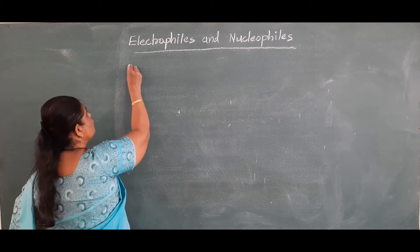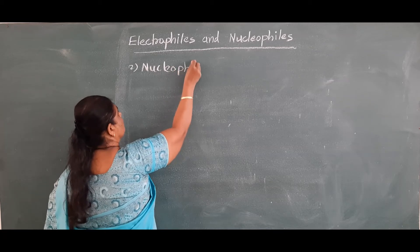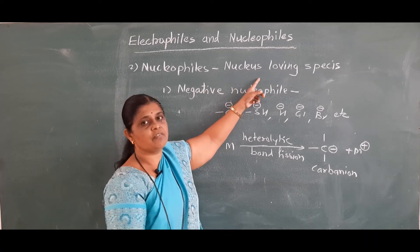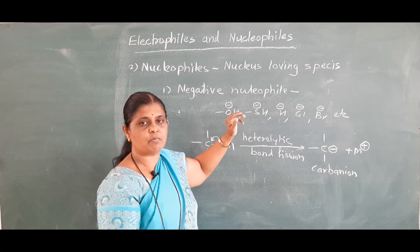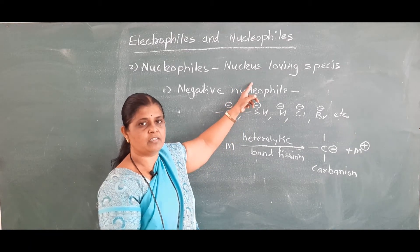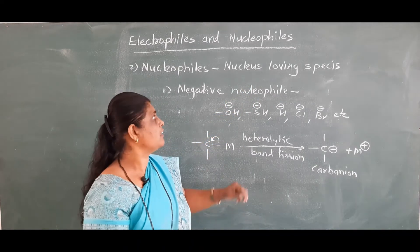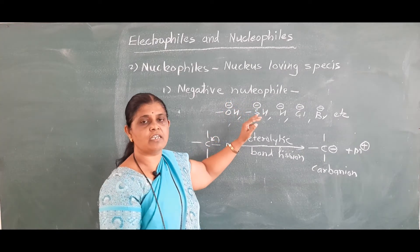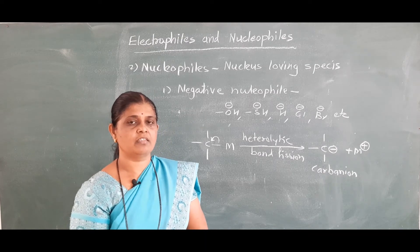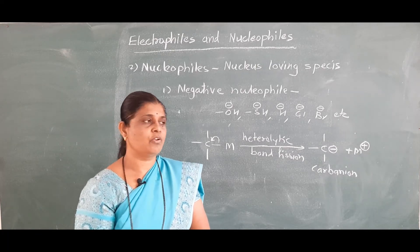The second is nucleophiles. Nucleophiles are nucleus loving species. The nucleus of an atom is positively charged, and nucleus loving species are known as nucleophiles. That is, these species are electron rich species, and they have the tendency to go towards electron deficient centers. Such species are known as nucleophiles. They have an extra lone pair of electrons, therefore they are known as nucleophiles.